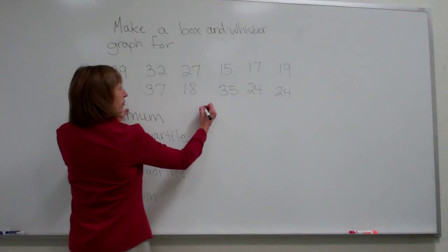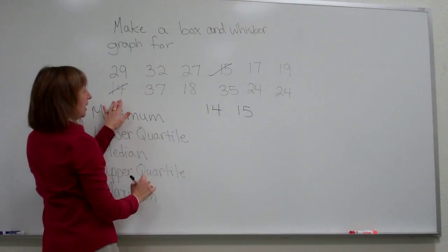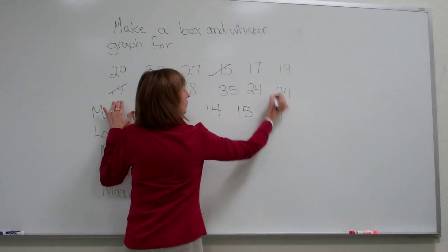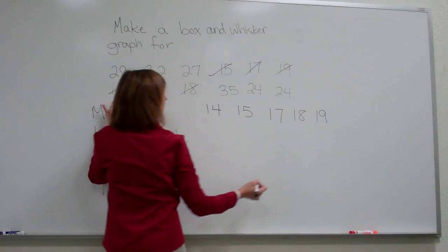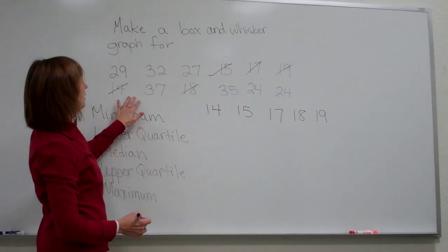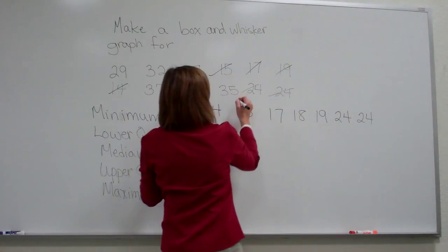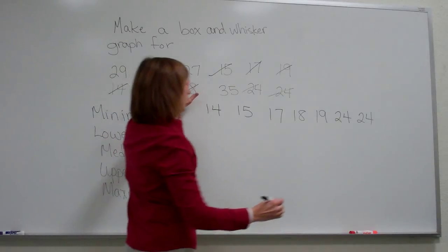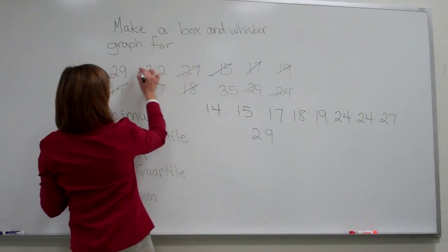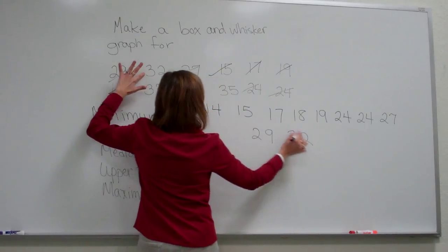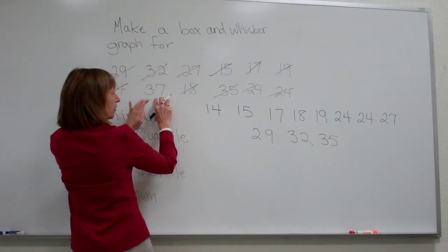When I scan through here, I see that I have a lowest value of 14, and then 15, then I have 17, 18, 19. Then we have 24, 24, 27, 29, 32, 35, and 37.